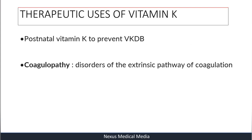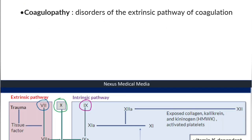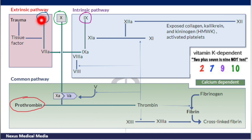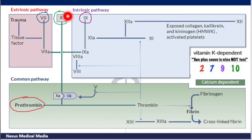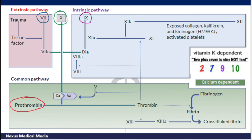Therapeutic uses include postnatal Vitamin K to prevent VKDB, and also treatment of coagulopathy — specifically disorders of the extrinsic pathway of coagulation. In the extrinsic pathway, after trauma, tissue factor is exposed and converts inactive Factor 7 into its active form, which then continues into the common pathway. A dedicated video on coagulation is available via the link in the top right corner.